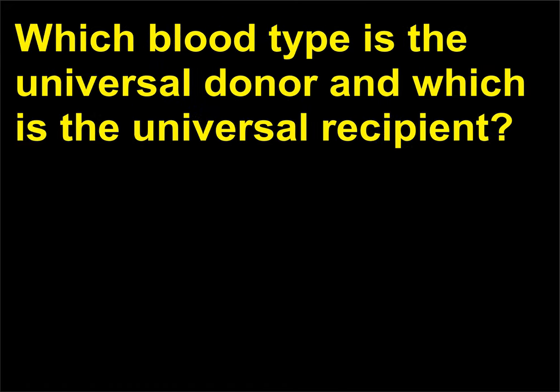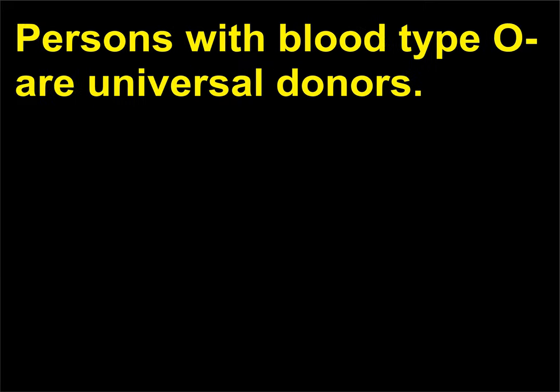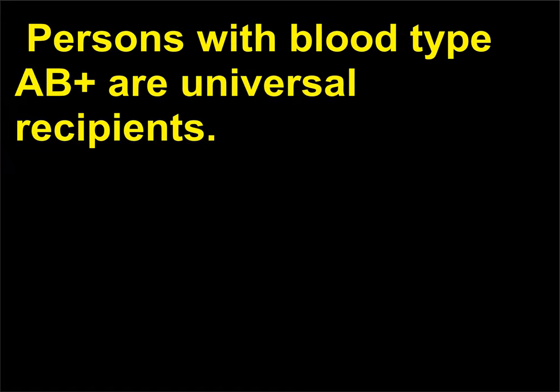Which blood type is the universal donor and which is the universal recipient? Persons with blood type O are universal donors — they are able to donate blood to anyone. Persons with blood type AB are universal recipients — they are able to receive blood from any donor.